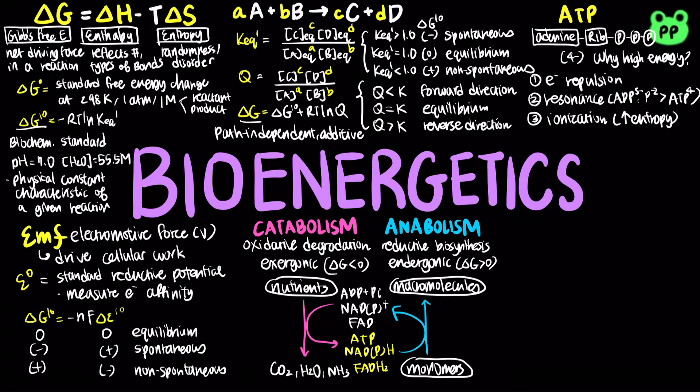Anabolic processes are endergonic, which absorbs energy. Reductive biosynthesis synthesizes proteins from amino acids, DNA from nucleic acids, lipids, vitamins, glycogen, and other macromolecules from small monomers.